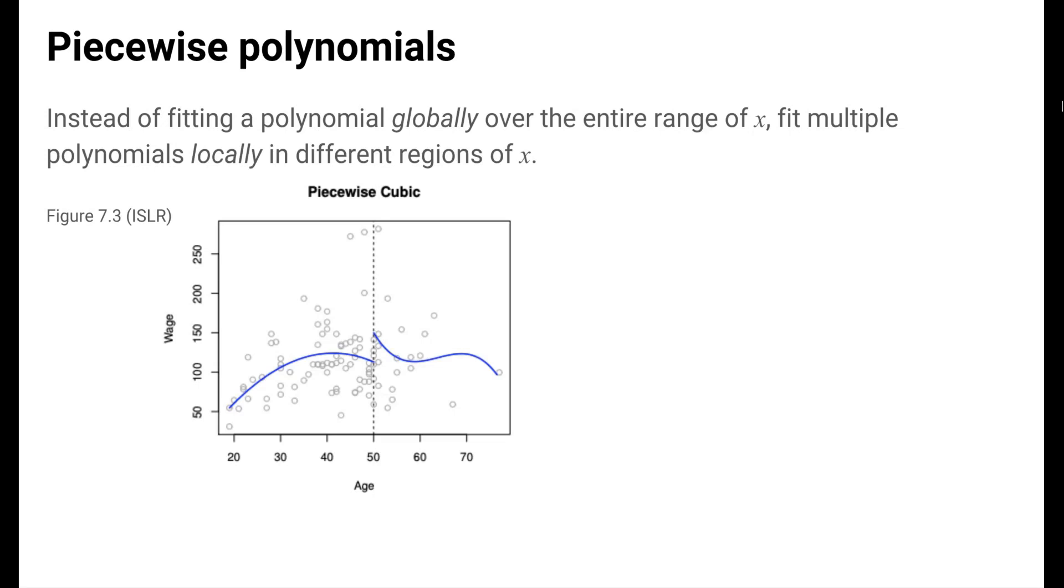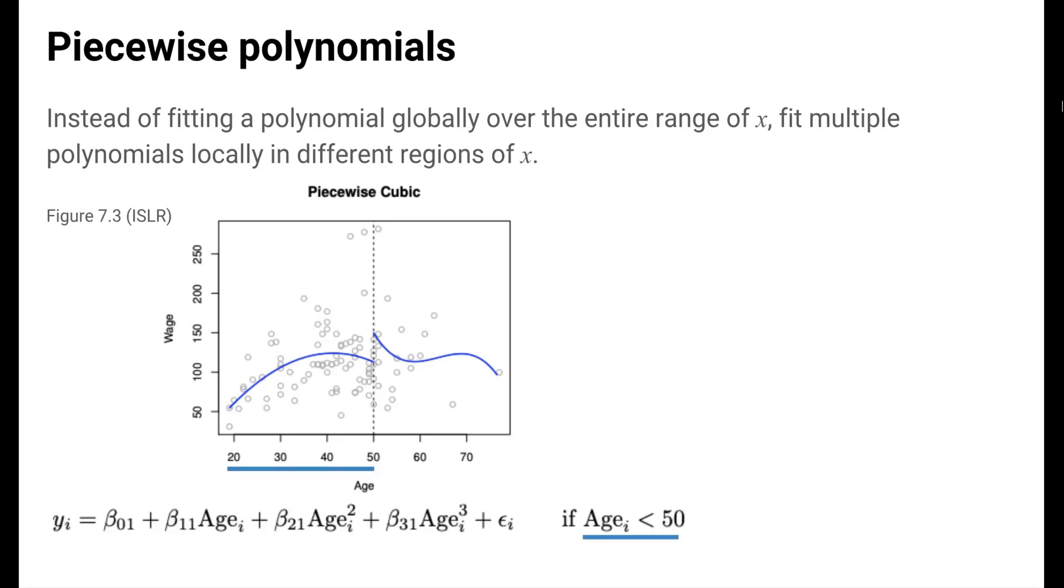We can, in fact. Let's look at the idea of piecewise polynomials. Instead of fitting a polynomial globally over the entire range of x, we fit multiple polynomials locally in different regions of x. In an example here from the ISLR book, wages are modeled as a non-linear function of age with two piecewise polynomials. A degree 3 polynomial with one set of coefficients is used for the region of age less than 50. A second degree 3 polynomial with another set of coefficients is used when age is greater than or equal to 50. The point at age equals 50 where the coefficients for the polynomial terms change is called a knot.